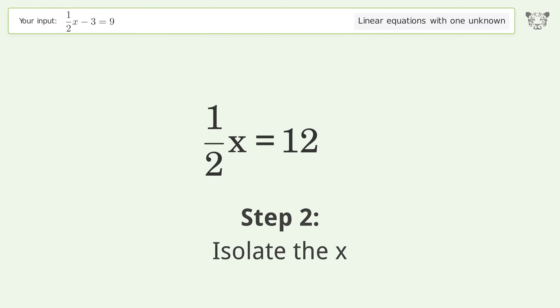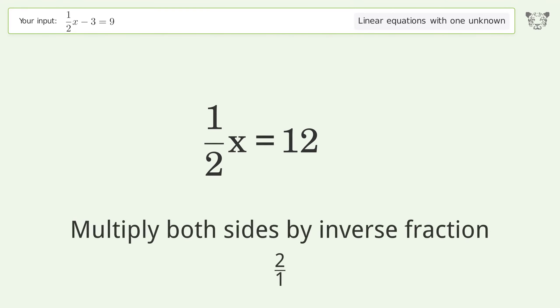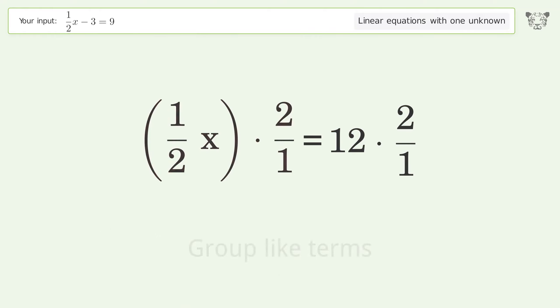Isolate the x. Multiply both sides by inverse fraction 2 over 1. Group like terms.